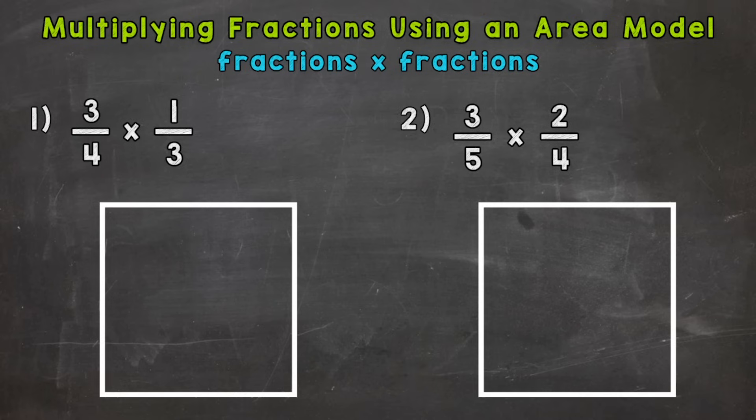So these area models are going to help us visualize what we're doing in these problems and how we get our answers. And we have two examples that we're going to go through together. So let's jump right into number one here, where we have three-fourths times one-third. And we're going to start with that three-fourths.